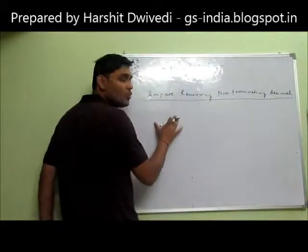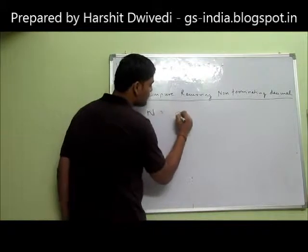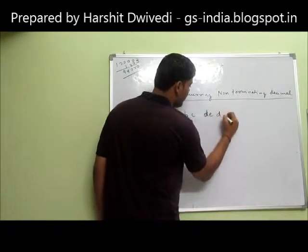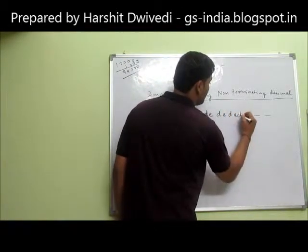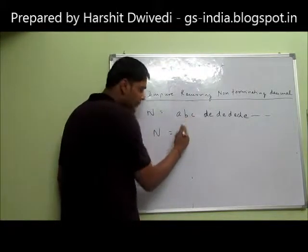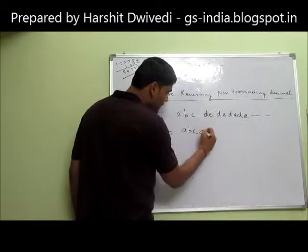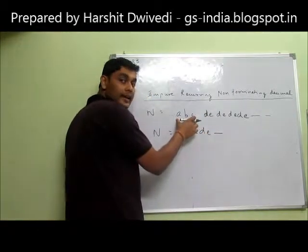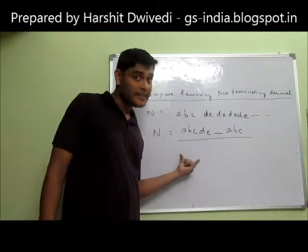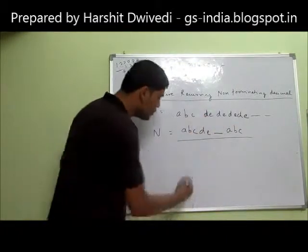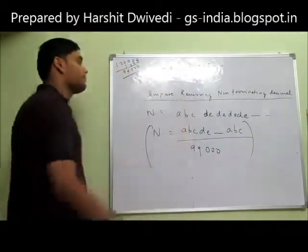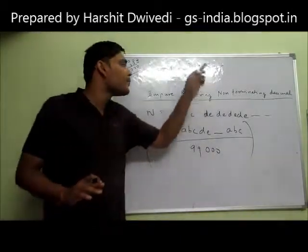Before finishing this lecture, let me tell you the method in a generalized form. Suppose the number is A B C . D E D E D E so on. To rationalize: n equals (first non-repeated digits ABC, then one time repeated digits DE, minus non-repeated digits ABC) upon (two times 9 — because DE are 2 digits repeated — followed by three times 0 — because ABC are 3 digits not repeated). So the denominator is 99000. This is the generalized form for dealing with impure recurring non-terminating decimals.